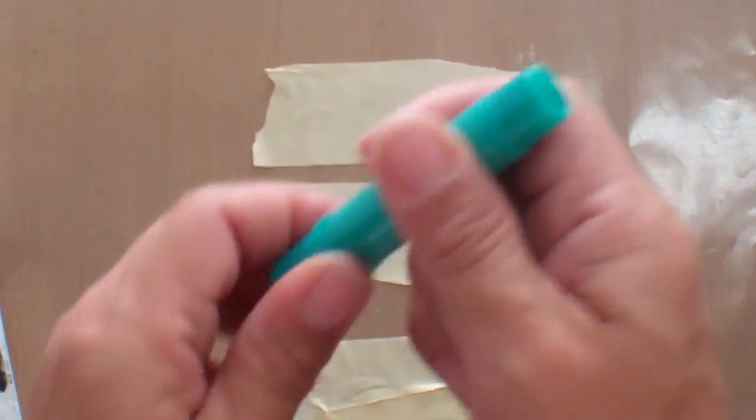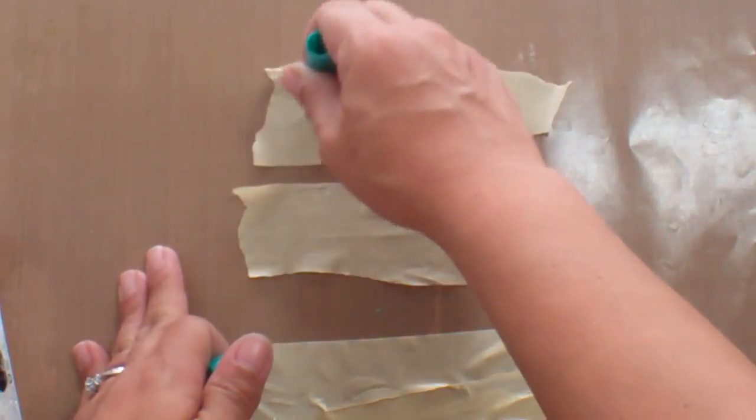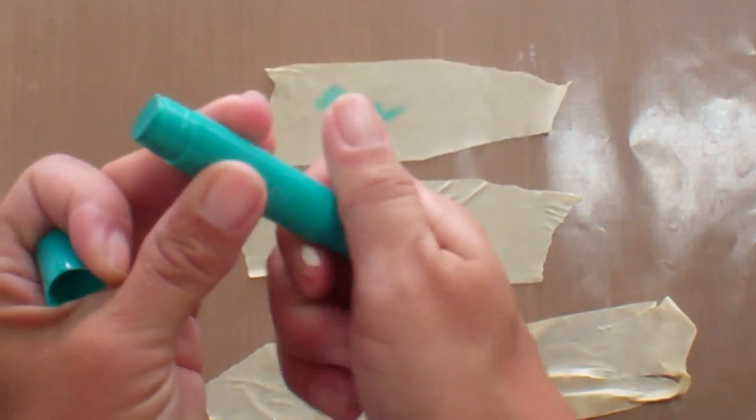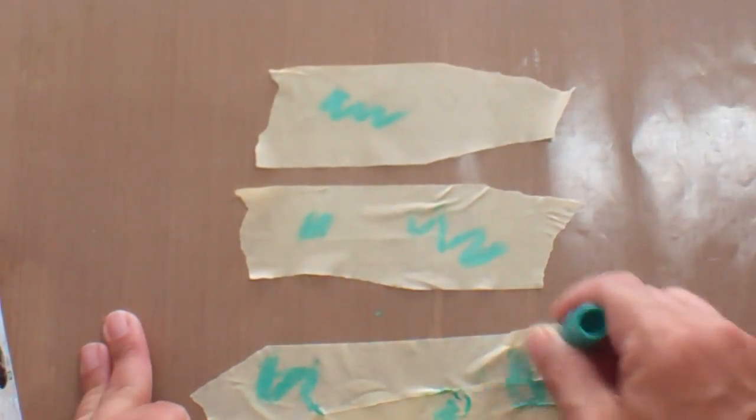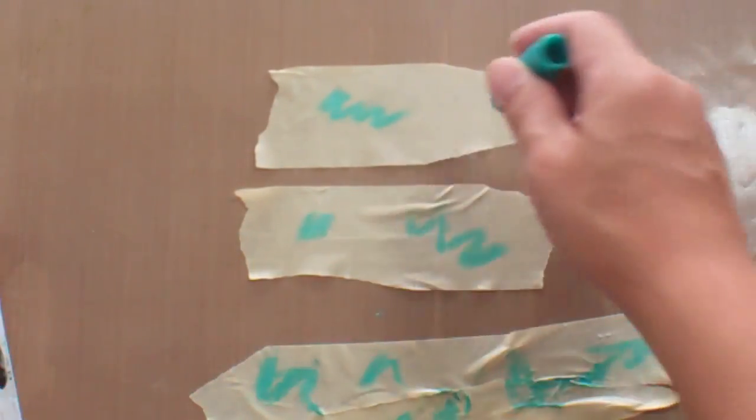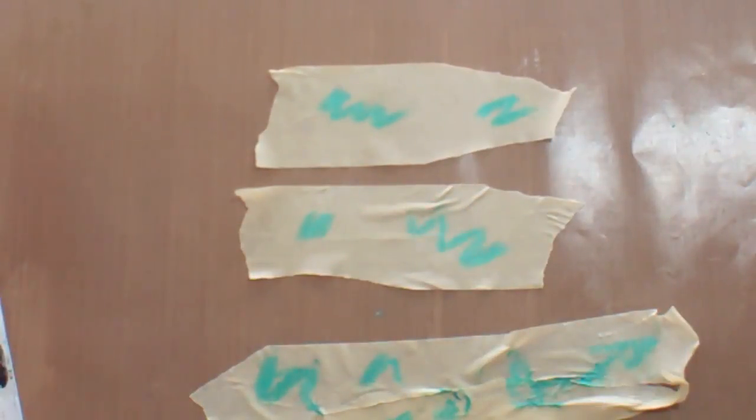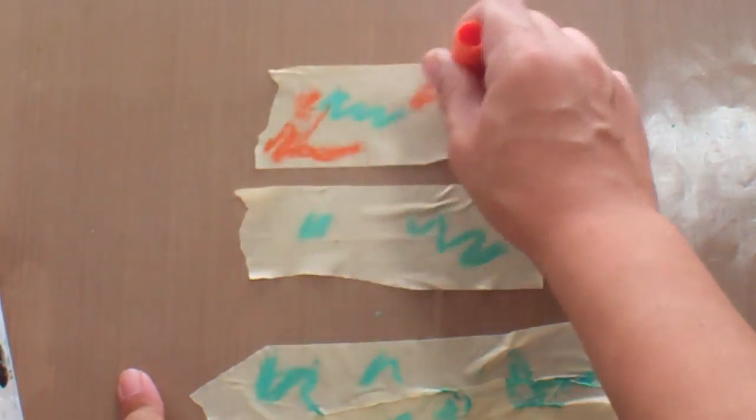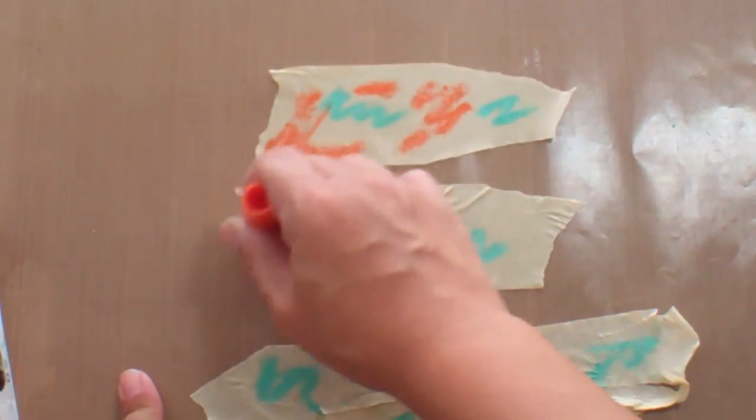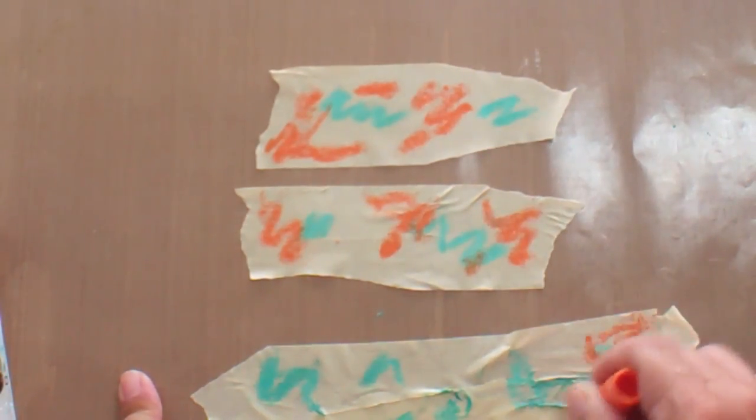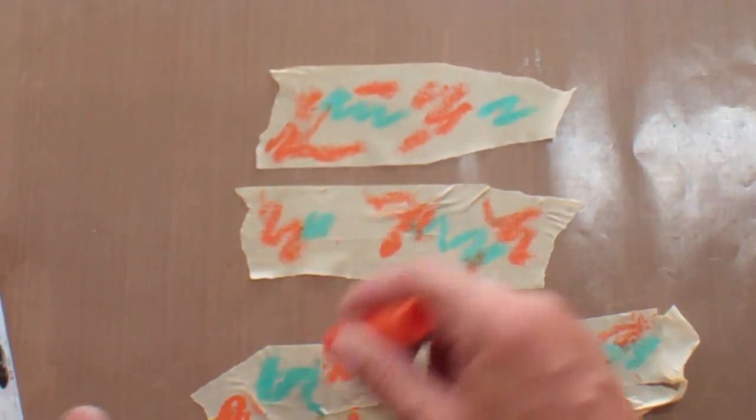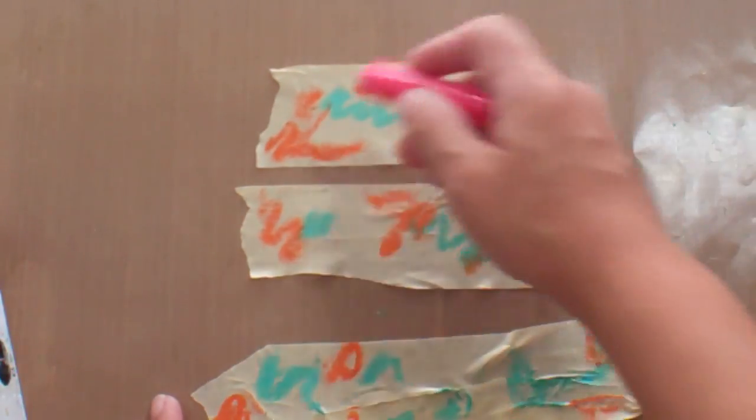So we are going to create designs on this masking tape with our gelatos. And you can just be random and do squigglies and spirals and lines.